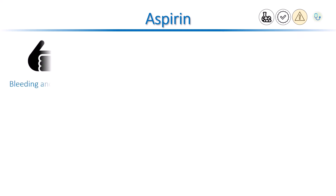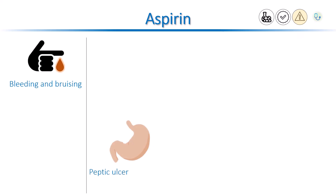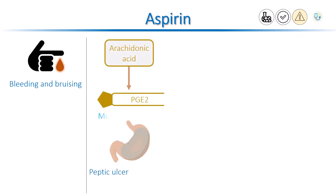Now let's see the adverse effects of aspirin. When we give aspirin, it blocks the normal function of platelets, so the patient bleeds or bruises more easily than normal. Additionally, aspirin can worsen peptic ulcer disease. Normally, arachidonic acid is used to make PGE2, which stimulates mucus production in the stomach lining. Mucus is a barrier that protects the stomach wall against erosion by gastric acid.